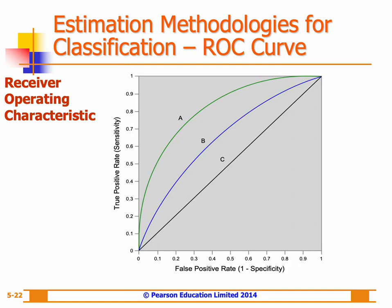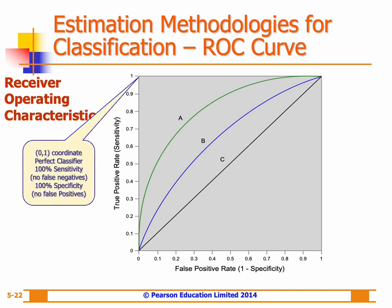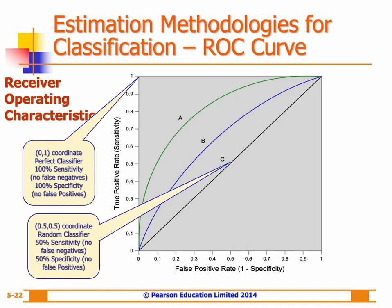Another assessment method for classification models is the Area Under the ROC curve, where ROC stands for Receiver Operating Characteristic. It is a graphical technique where the true positive rate is plotted on the y-axis and the false positive rate on the x-axis. A value of 1 indicates a perfect classifier, while a value of 0.5 indicates no better than random guessing. In practice, values range between these extremes — classifier A has better performance than B, while C performs no better than flipping a coin.